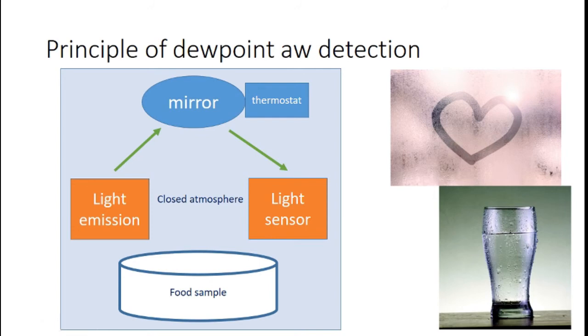The level of relative humidity is going to eventually condense on that mirror depending on the relative humidity in the closed atmosphere around this food sample and the temperature of the mirror. So that mirror is on a thermostat and the temperature slowly changes. Meanwhile, there's a little light sensor. It is pinging off a beam of light onto the mirror. The mirror is then reflecting it back onto a sensor.